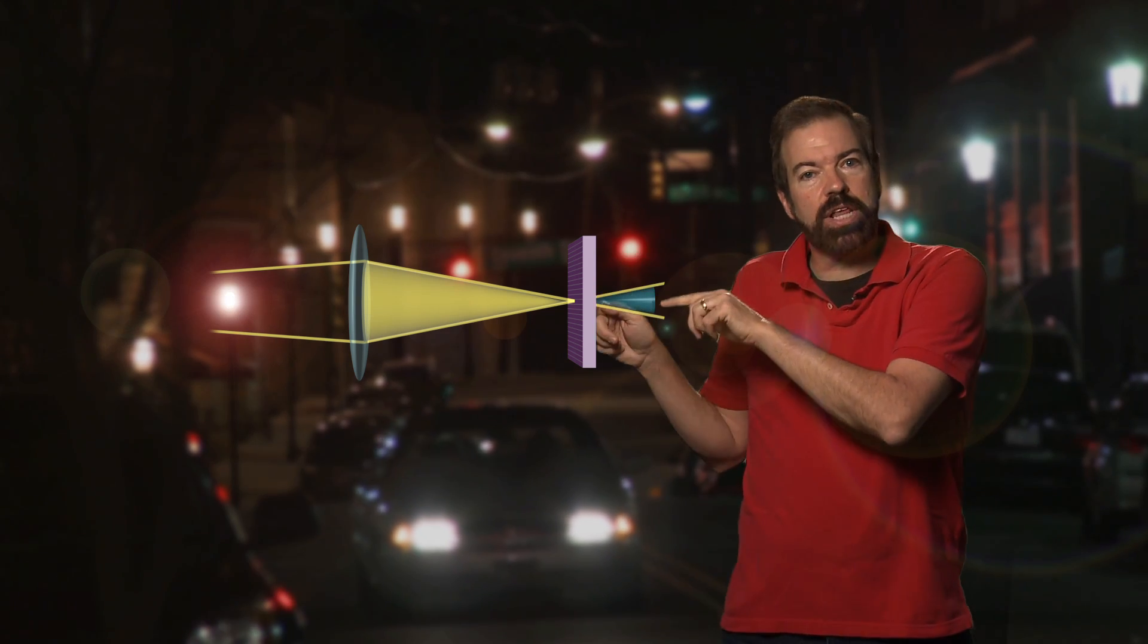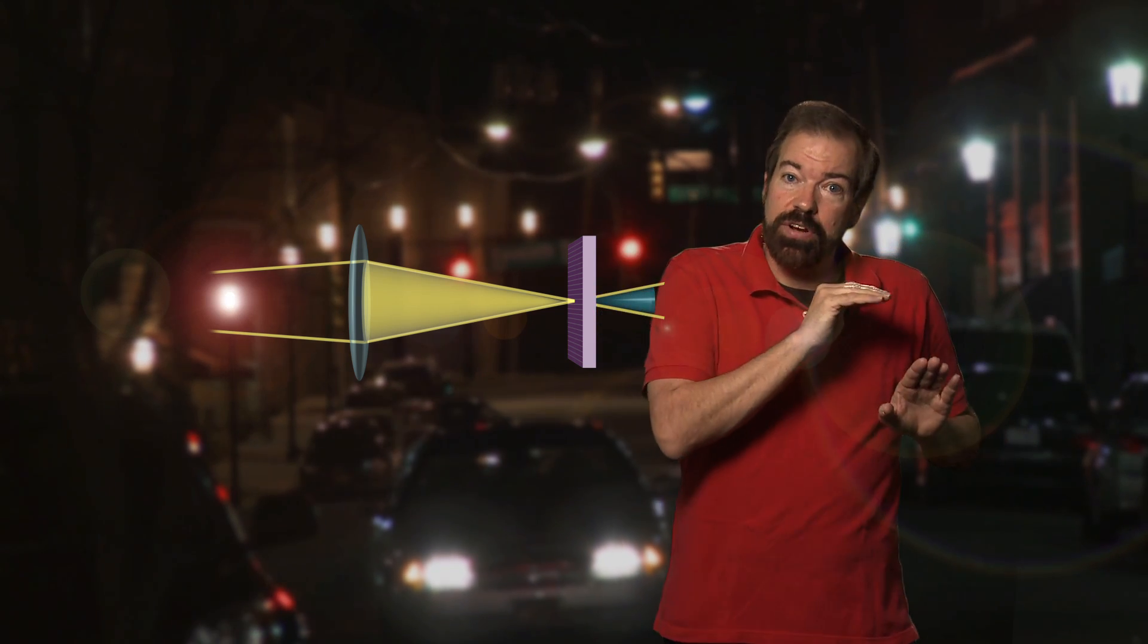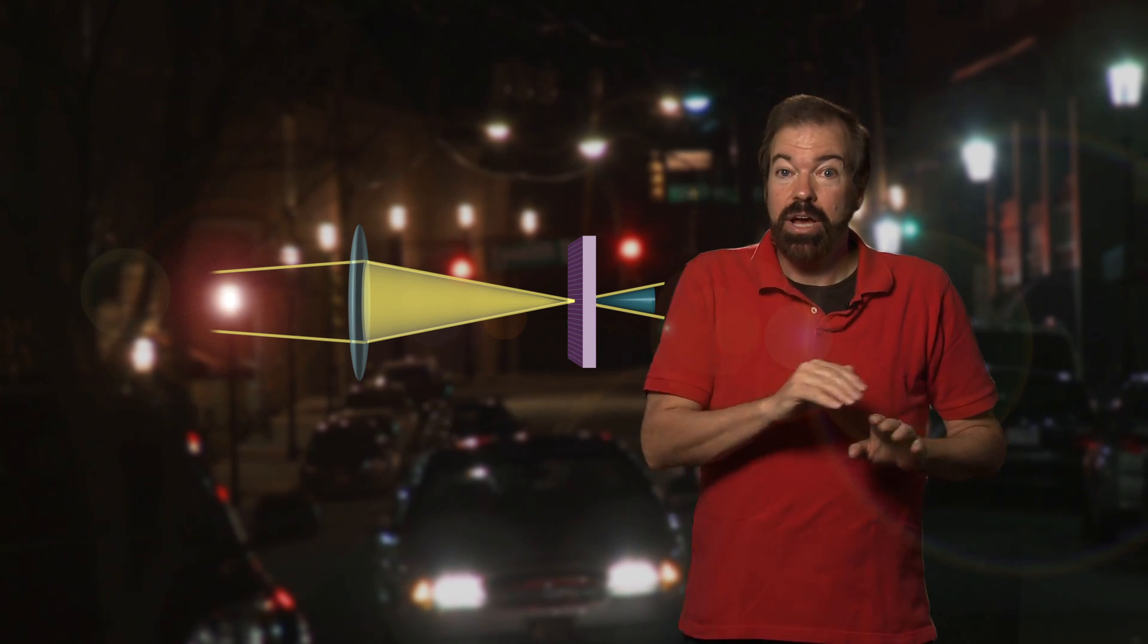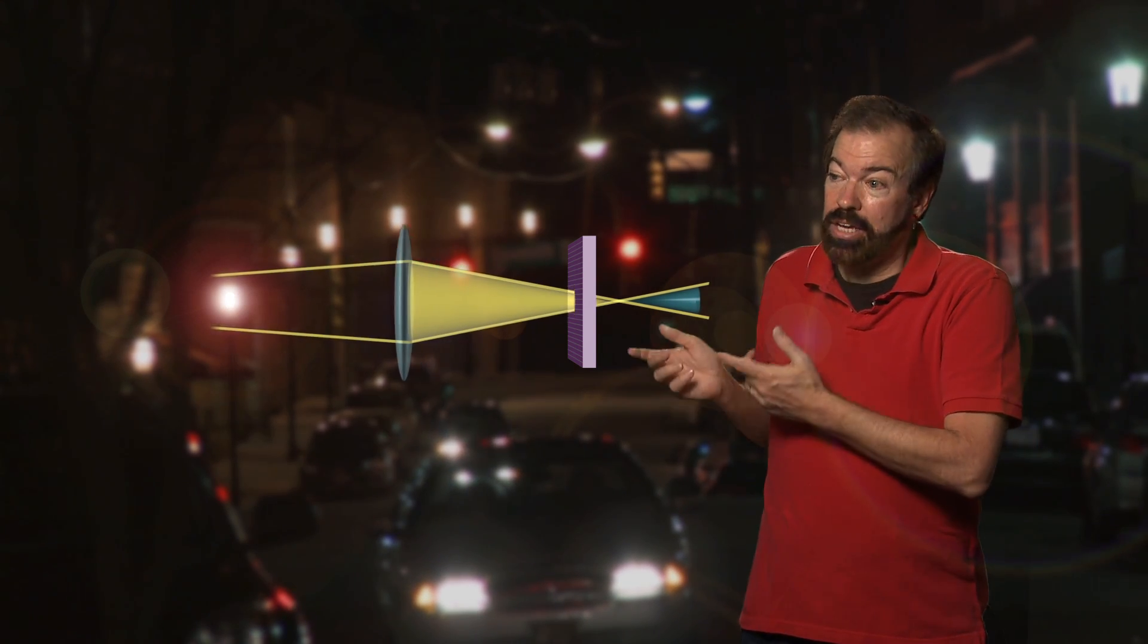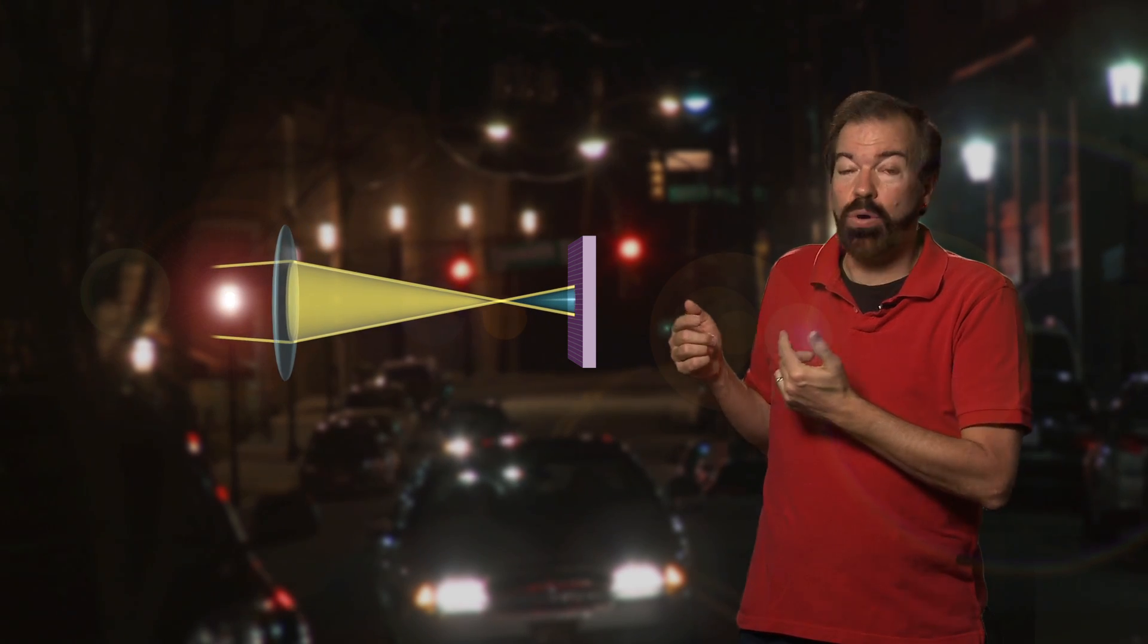Light from different distances in front of the lens comes to convergence at different distances behind the lens. When you're adjusting focus, what you're actually doing is changing the point behind the lens where light from different distances comes to convergence.